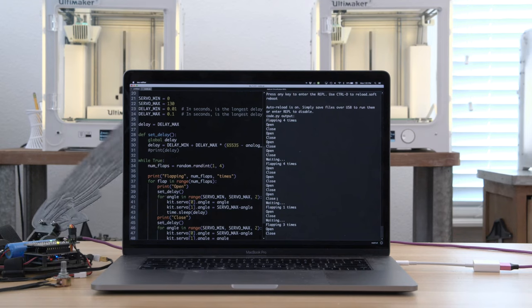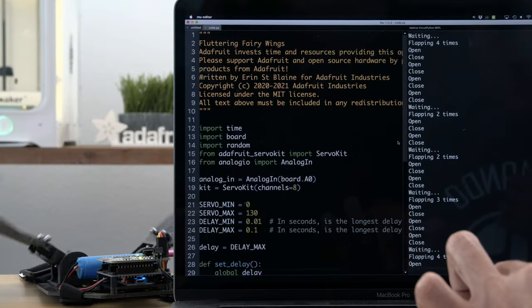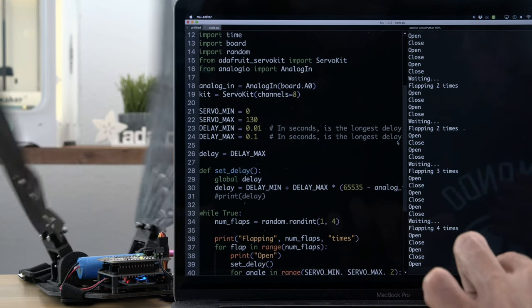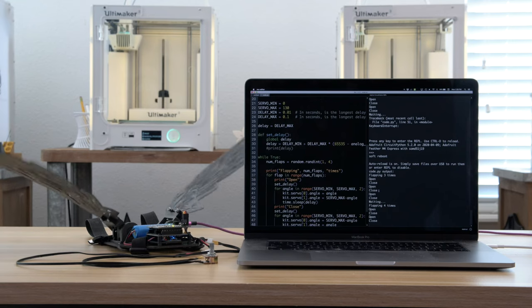Adafruit's CircuitPython makes these projects great for folks who are just getting started. The code was written by Aaron St. Blaine and uses the ServoKit library. The number of flutters and pauses are randomized to make it appear more organic.